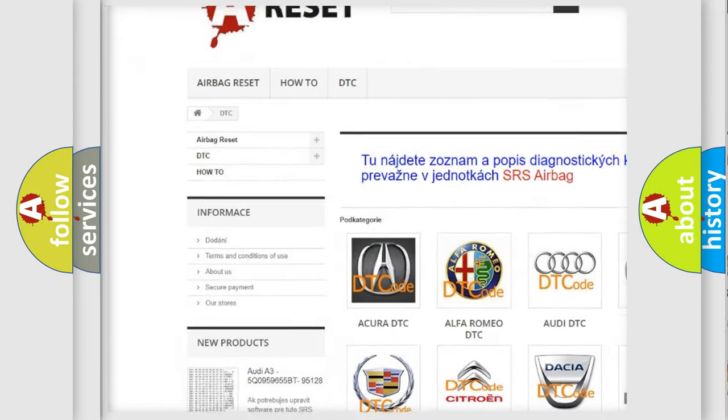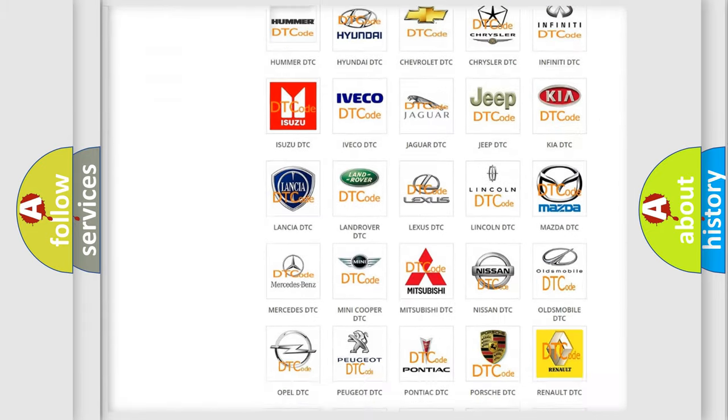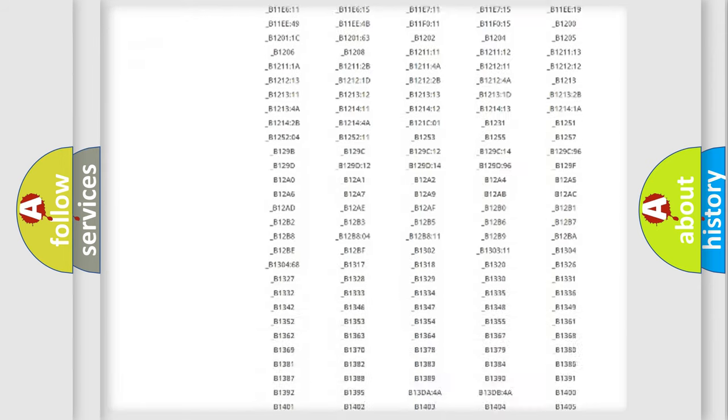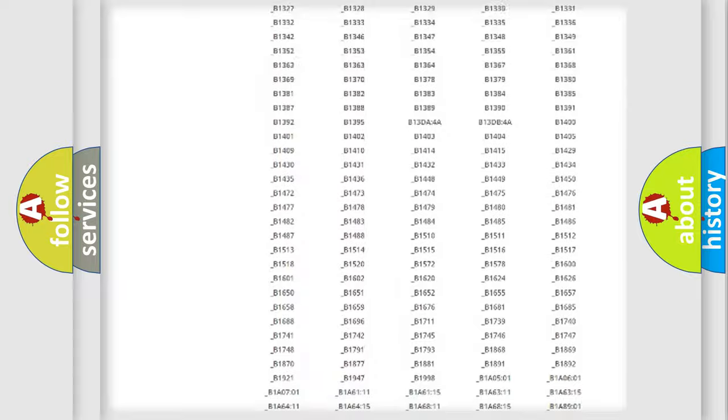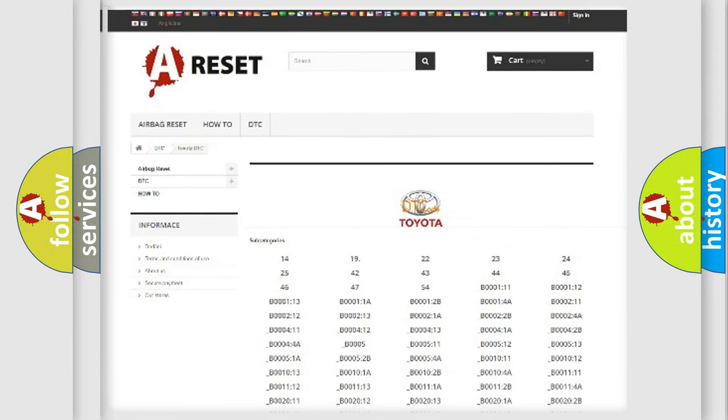Our website airbagreset.sk produces useful videos for you. You do not have to go through the OBD2 protocol anymore to know how to troubleshoot any car breakdown. You will find all the diagnostic codes that can be diagnosed in Toyota vehicles, and also many other useful things.